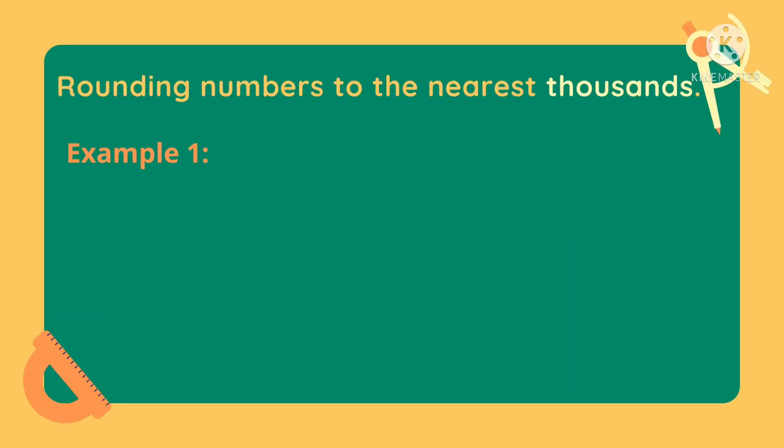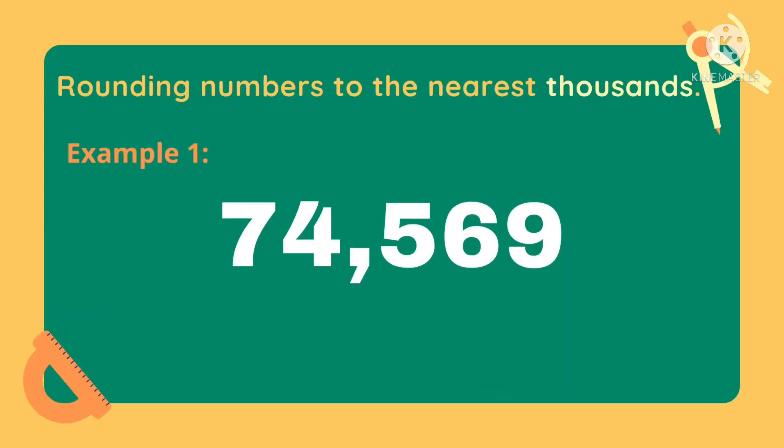Let's have this example. How do we round off 74,569 to the nearest thousand? To round off this number to the nearest thousands, we need to determine which digit is in the thousands place.